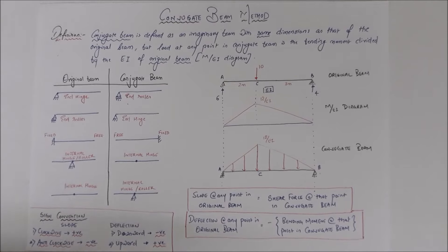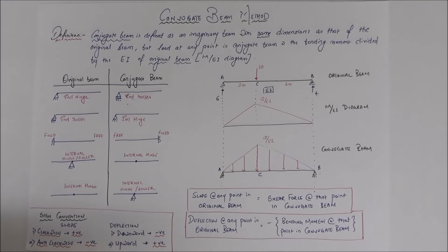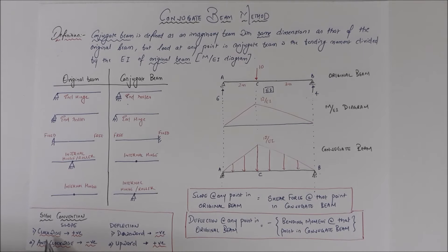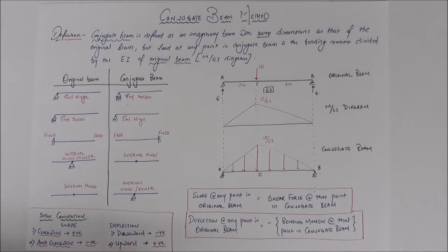We'll solve two numericals using this method — the same two I solved using the moment area method. The sign convention is: clockwise slope is positive, anti-clockwise slope is negative, downward deflection is negative, and upward deflection is positive. See you in the next lecture where we solve a numerical. Bye-bye!